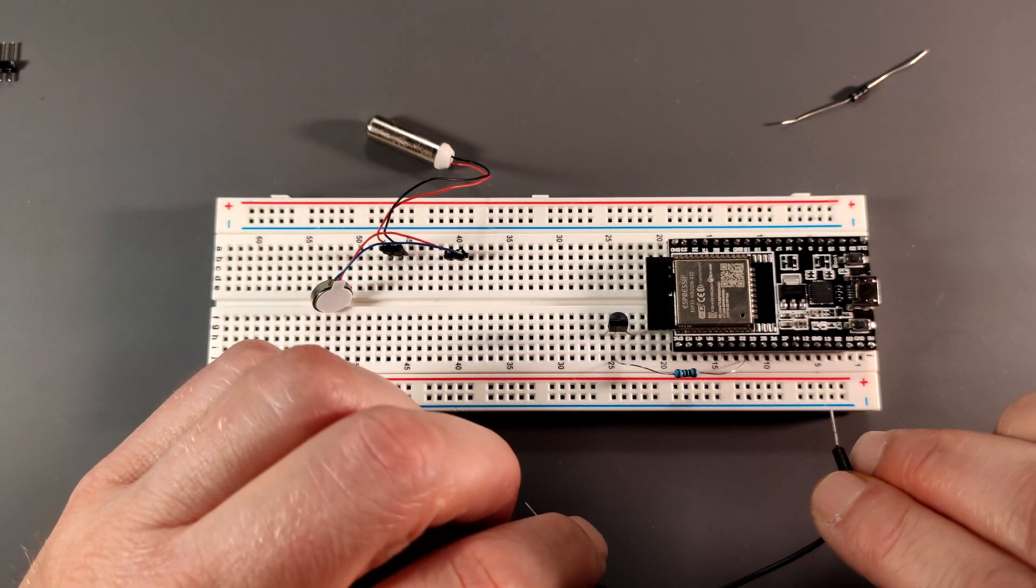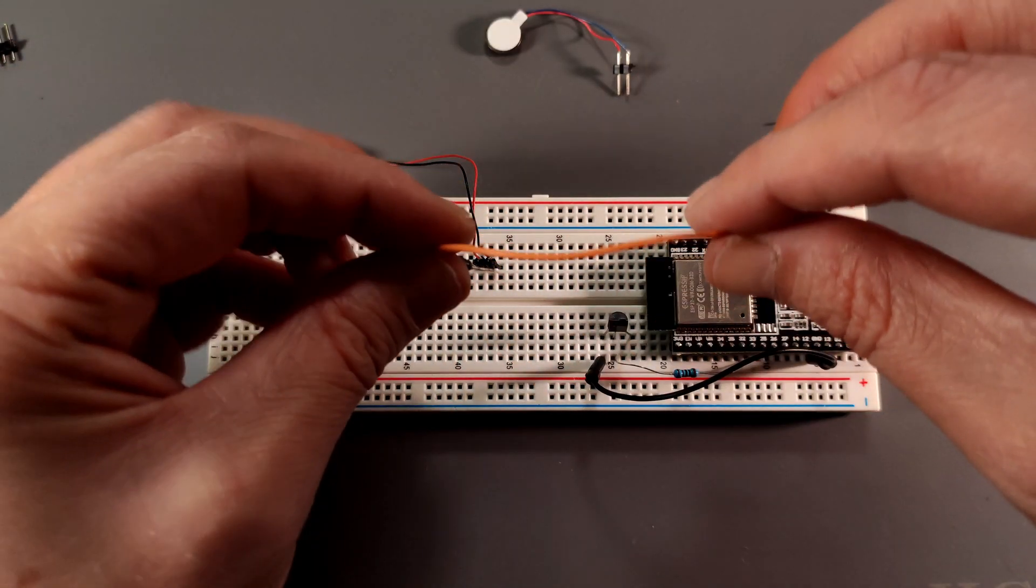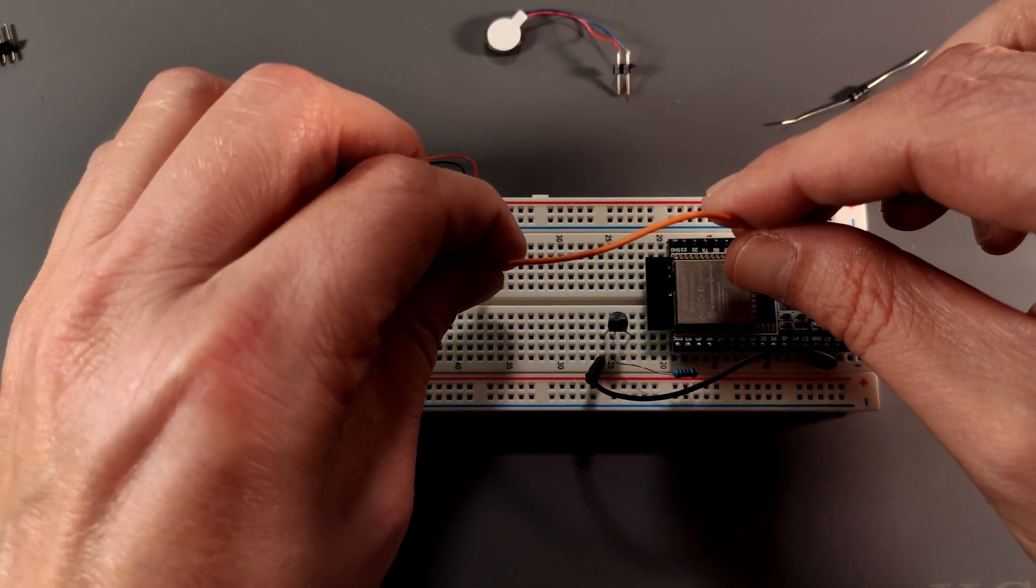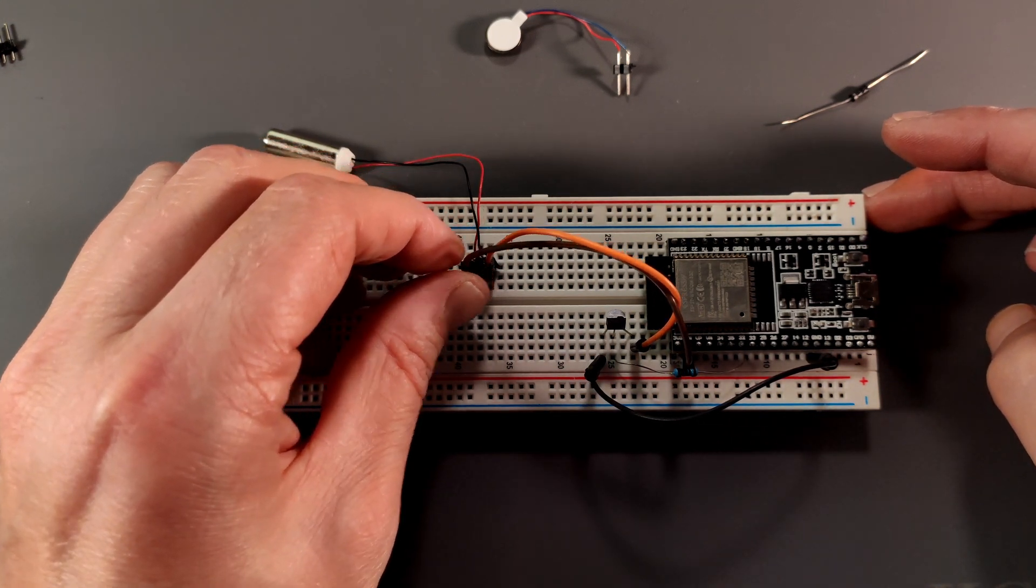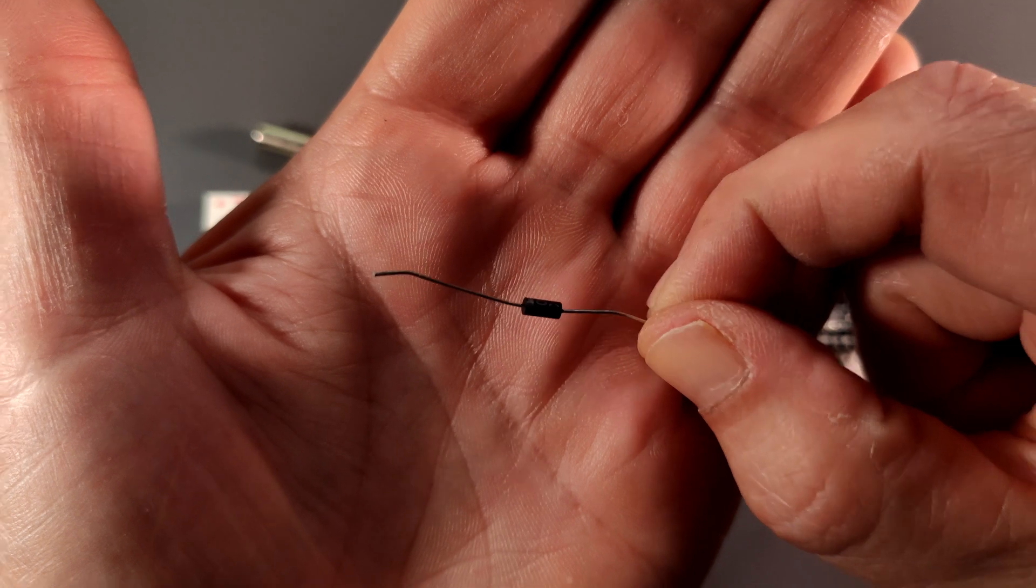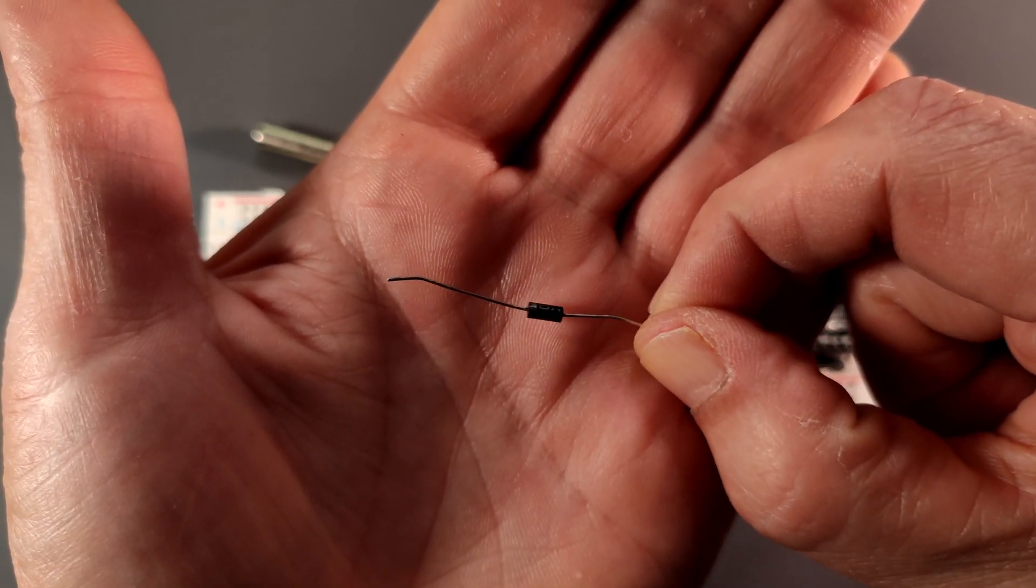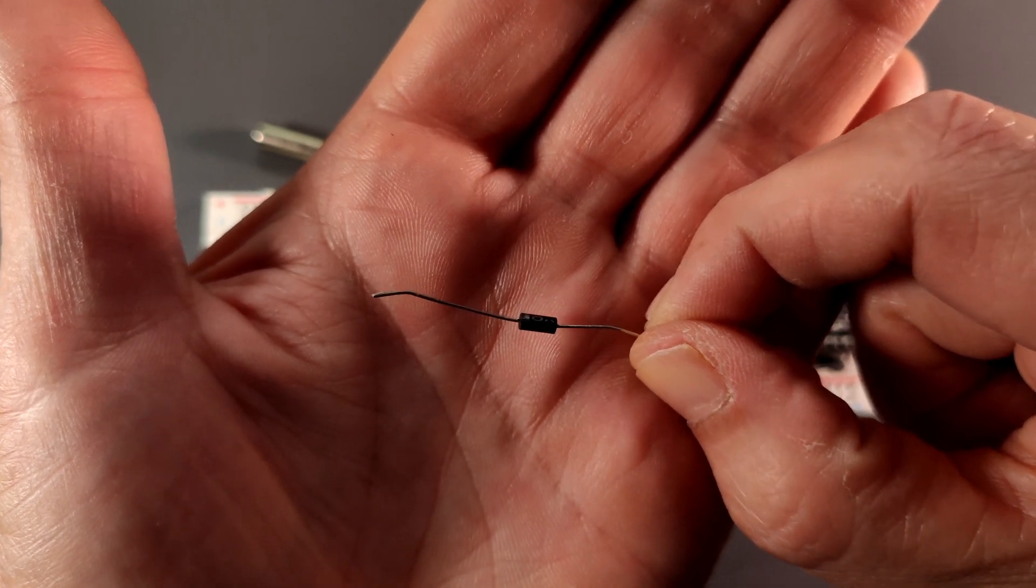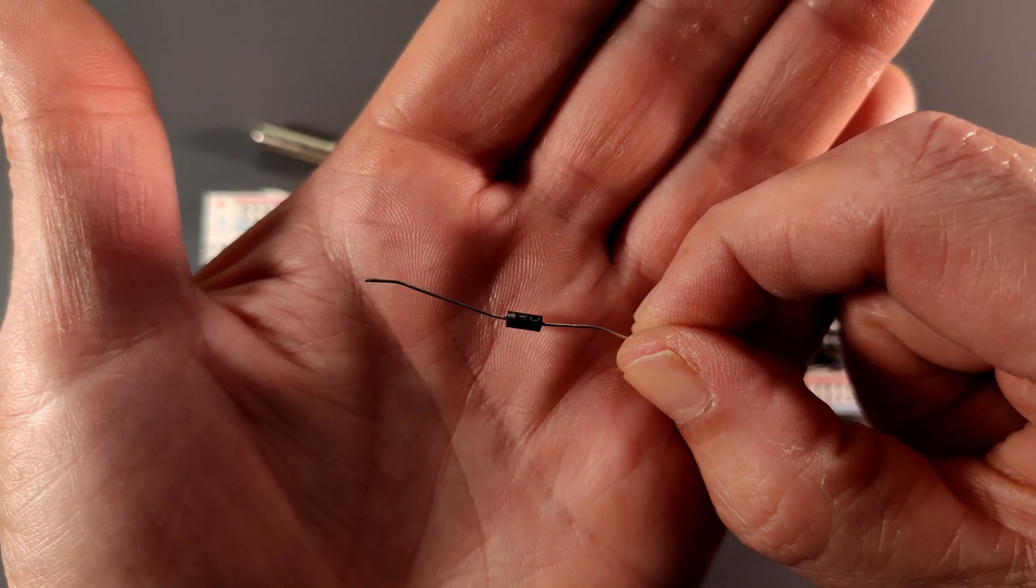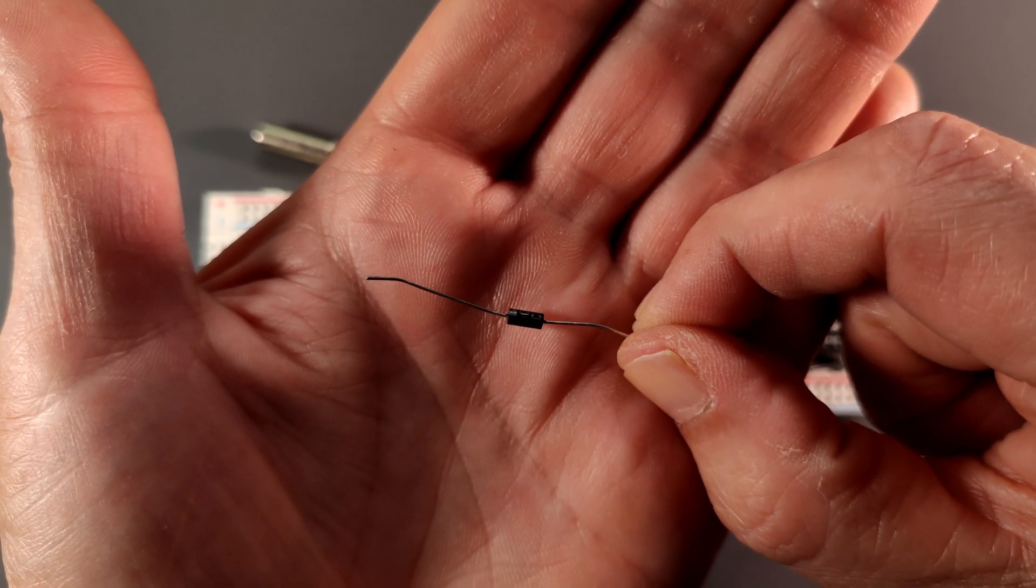The emitter goes to ground and the collector goes to one side of the motor and the other side of the motor is connected to the 3.3 volt rail. Now across the motor there's a diode and this diode is, as they say, reversed biased. Meaning that the cathode of the diode is pointing towards the 3.3 volt rail and the anode is connected to the other side of the motor.